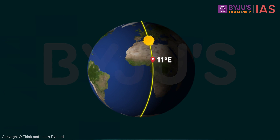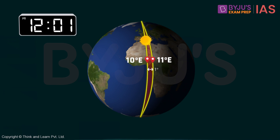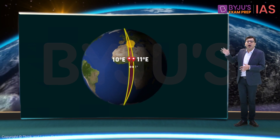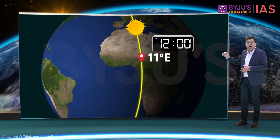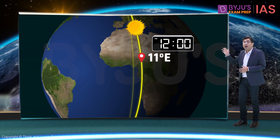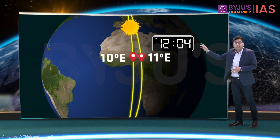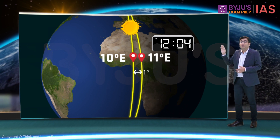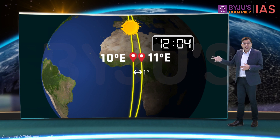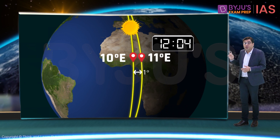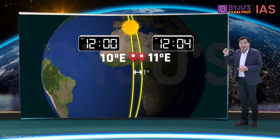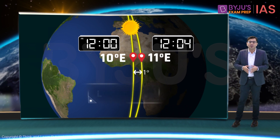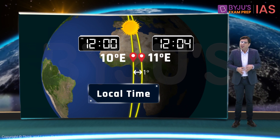If we include the sun in the picture, from the Earth's point of view, the sun will be covering a distance of one degree every four minutes. So if the sun appears to be above one place at this moment, after four minutes the sun will appear to be over a place which is one degree away. Therefore, these two places will have two different times — and this is what is called local time.